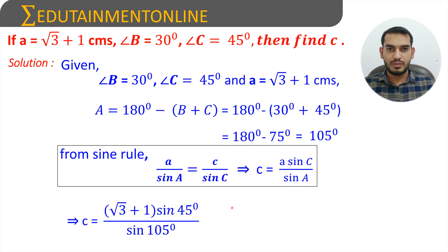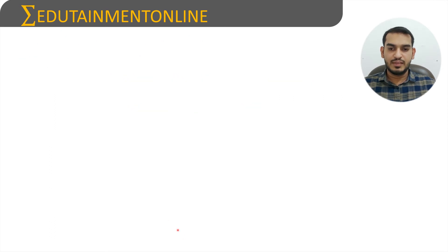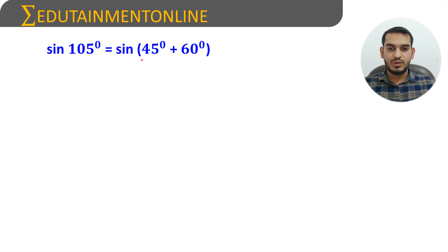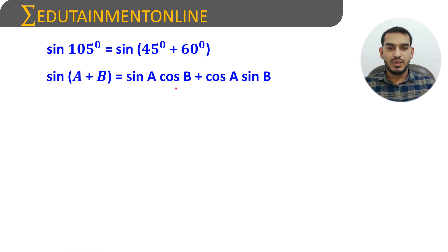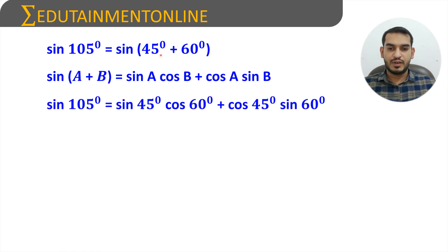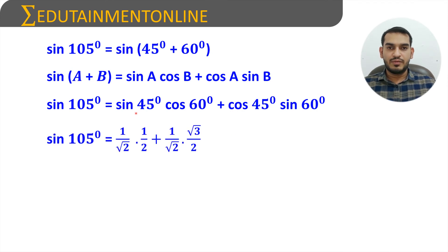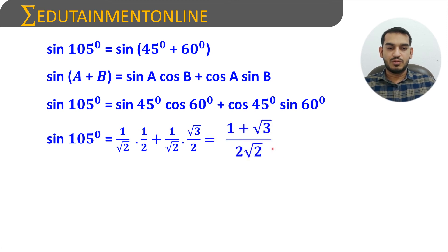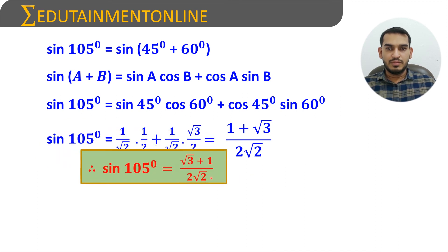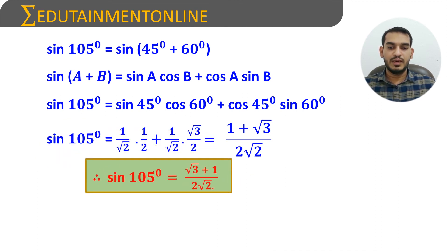We know that sin 45 degrees is equals to 1 by root 2 and sin 105 degrees we have to calculate. So, I can write sin 105 degrees as sin(45 degrees plus 60 degrees). This is in the form of sin(A plus B), expanding as sin A cos B plus cos A sin B. So, sin 45 degrees into cos 60 degrees plus cos 45 degrees into sin 60 degrees. Sin 45 degrees is 1 by root 2, cos 60 degrees is 1 by 2, cos 45 degrees is 1 by root 2, and sin 60 degrees is root 3 by 2. The denominator is common which is 2 root 2, so we can write this as 1 plus root 3 by 2 root 2. So, sin 105 degrees is equals to root 3 plus 1 by 2 root 2.